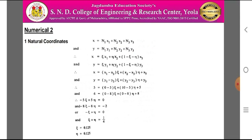For calculation of natural coordinates and shape functions, we use x = N1·x1 + N2·x2 + N3·x3 and y = N1·y1 + N2·y2 + N3·y3. Substituting N1 = epsilon, N2 = neta, N3 = 1 − epsilon − neta: x = (x1 − x3)·epsilon + (x2 − x3)·neta + x3, and y = (y1 − y3)·epsilon + (y2 − y3)·neta + y3.